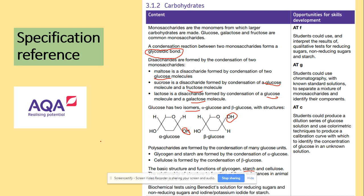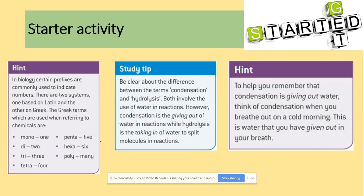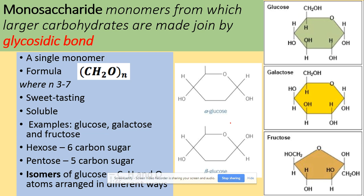We also will be looking at the biochemical tests that are used to identify sugars in solutions and polysaccharides. So let's get started. As we've mentioned, you need to be aware of hydrolysis and condensation that we learned about in our first video, and those will be following us for the whole of section one. So monosaccharides are monomers from which larger carbohydrates are made, and they are joined by a glycosidic bond.